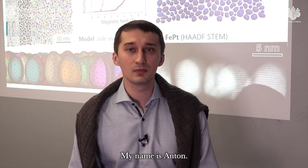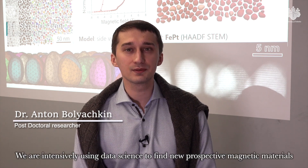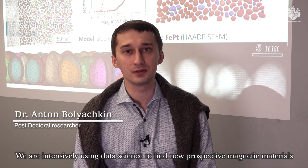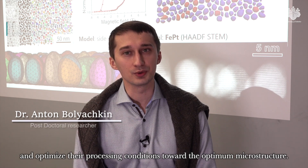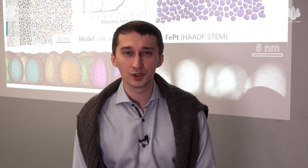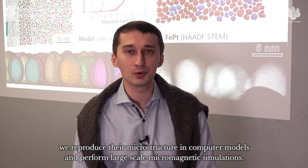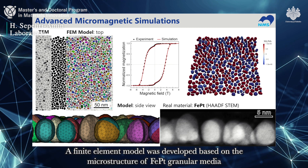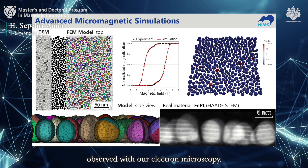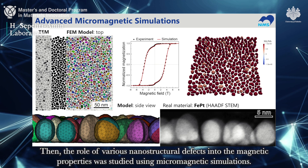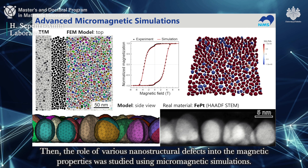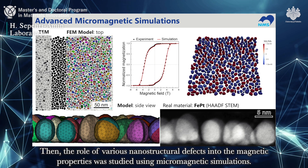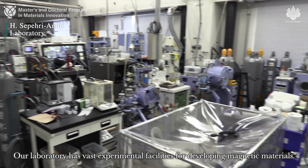My name is Anton. I am a postdoctoral researcher in NIMS. We are intensively using data science to find new prospective magnetic materials and optimize their processing conditions towards the optimum microstructure. To understand the origin of magnetic hysteresis, we reproduce their microstructure in computer models and perform large-scale micromagnetic simulations. A finite element model was developed based on the microstructure of iron-platinum granular media observed with our electron microscopy, and the role of various nanostructural defects in the magnetic properties was studied.